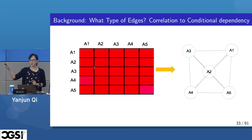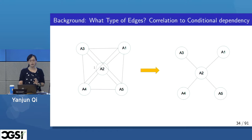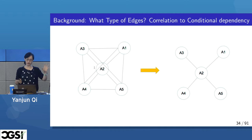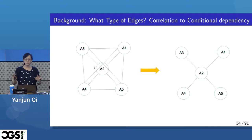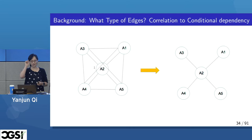If instead we do conditional dependencies, the graph we get is a much sparser graph. Here A2 — hot weather — is actually related to all other variables, and all other variables when conditioned on A2 are conditionally independent of each other. So this is the sparse graph I'm looking for. As someone noted, it's like partial correlation — yes, I have a slide later to talk about that. In the end, our task is: given observed samples about multiple variables, estimate a conditional dependency graph.